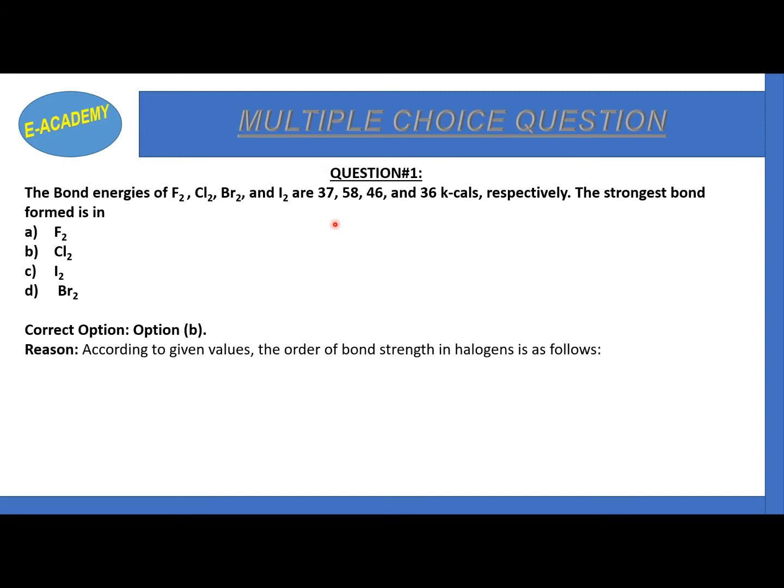Correct option B. According to given values, the order of bond strength in halogens is as follows: first is chlorine, then bromine, then fluorine, and last is iodine. Chlorine is the strongest and iodine is the weakest bond in halogens.